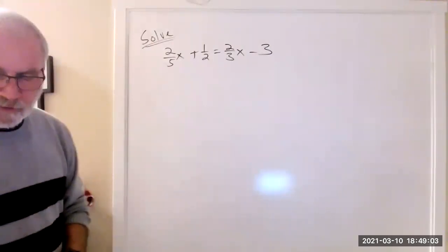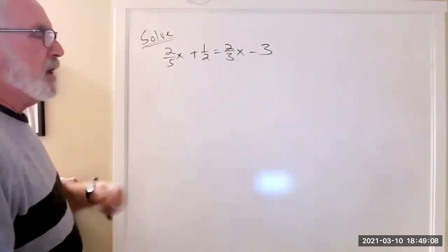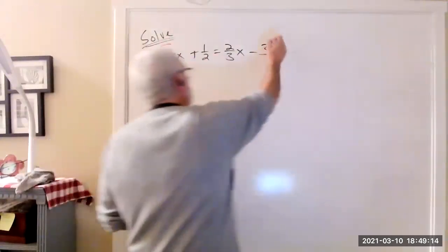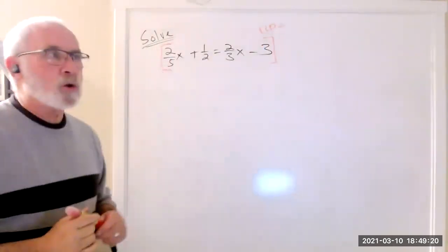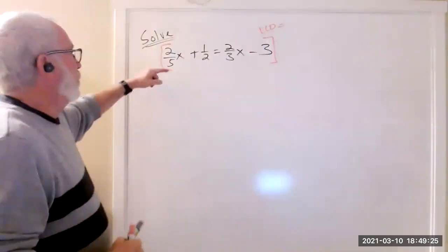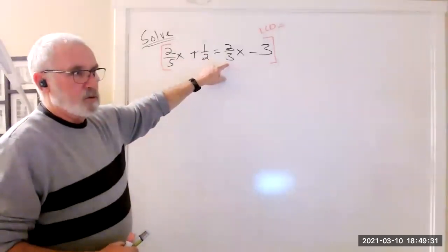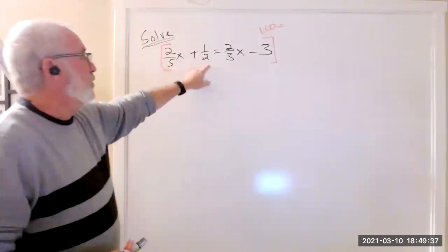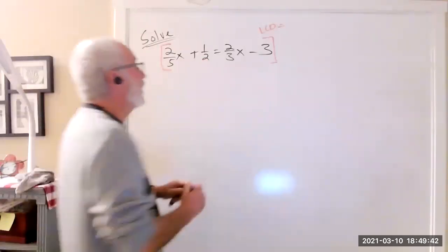This is a problem with fractions from early in the semester. The trick we wanted to use was the LCD, the lowest common denominator, to wipe out all of the denominators. So what single number will cancel with a 5, a 2, and a 3? The answer is 30, because 2 does not go into 15.